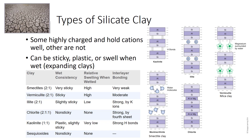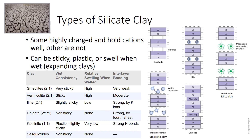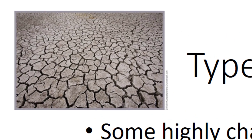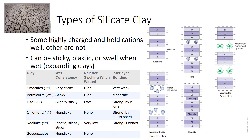Several types of clays result from the ways in which one-to-one or two-to-one layers bond together. Some clays are highly charged and hold cations well, others are not. Some clays are sticky, some are plastic, and some swell when wet. Two important traits of silicate clays depend on how easily the layers can be separated. If they loosen easily, water can enter the micelle between the layers, and the particle will swell when wetted and shrink when dried — such clays are called expanding clays. If layers separate, more surface area is exposed for adsorption of cations, so clays with loosely bound layers usually hold more nutrients. Notice the mud cracks in this expanding clay. This vertosol swells as it wets and shrinks as it dries, forming these deep, wide cracks.